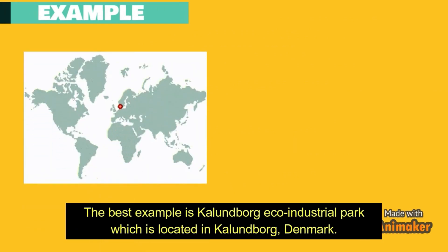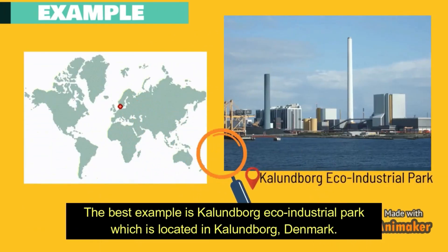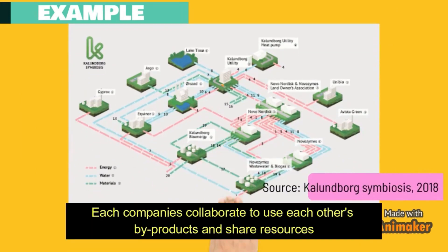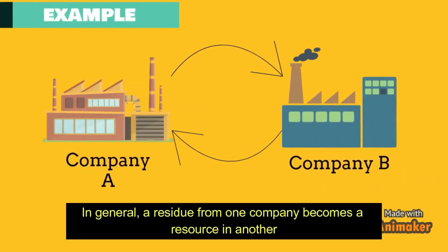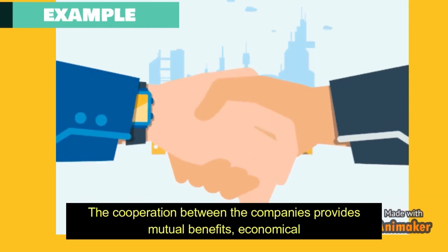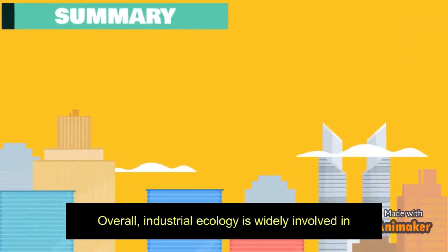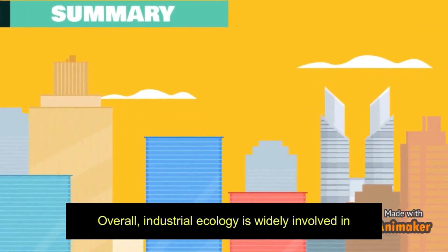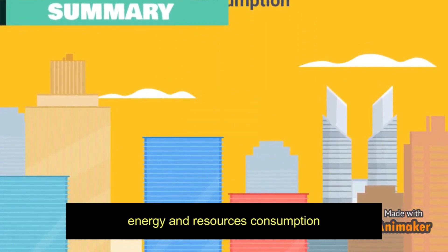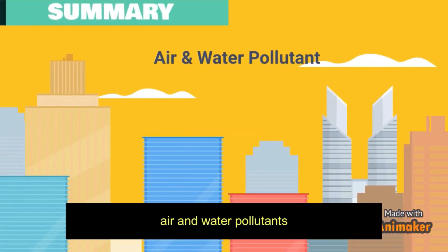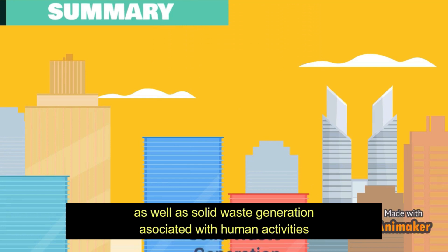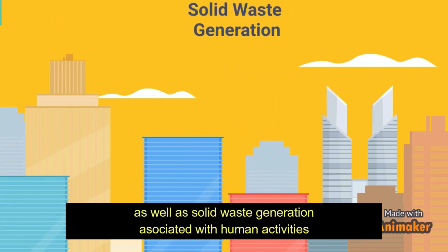A best example is Kalemberg Eco-Industrial Park, which is located in Kalemberg, Denmark. Each company collaborates to use each other's by-products and share resources. In general, a residue from one company becomes a resource in another. The cooperation between the companies provides mutual benefits, economical as well as environmental. Overall, industrial ecology is widely involved in energy and resource consumption, air and water pollutants, as well as solid waste generation associated with human activities.